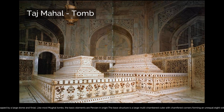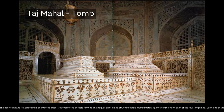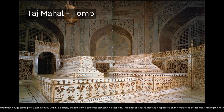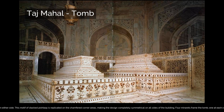The base structure is a large multi-chambered cube with chamfered corners forming an unequal eight-sided structure approximately 55 meters, or 180 feet, on each of the four long sides. Each side of the iwan is framed with a huge pishtak, or vaulted archway, with two similarly shaped arched balconies stacked on either side. This motif of stacked pishtaks is replicated on the chamfered corner areas, making the design completely symmetrical on all sides. Four minarets frame the tomb, one at each corner of the plinth facing the chamfered corners.